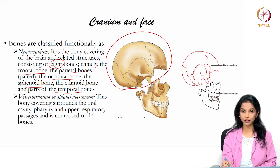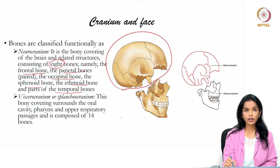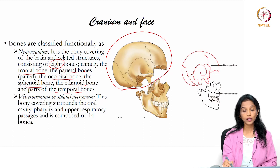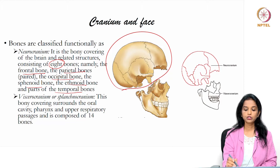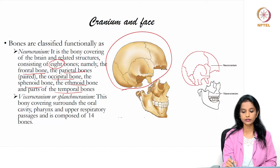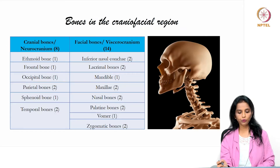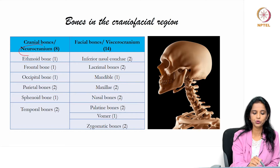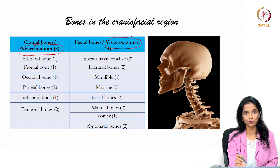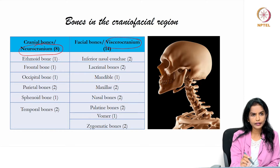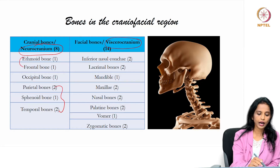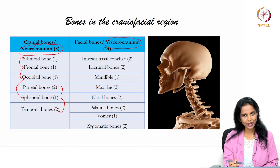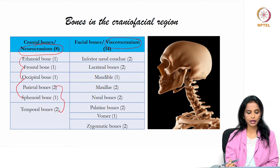In this picture the cranial bone is shown disarticulated and kept separately, so the top part is the cranium made of 8 bones, and the lower facial region is made up of 14 bones. Among the 8 cranial bones constituting the neurocranium, there are 4 unpaired bones and 2 paired bones.